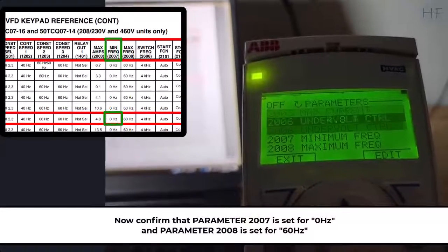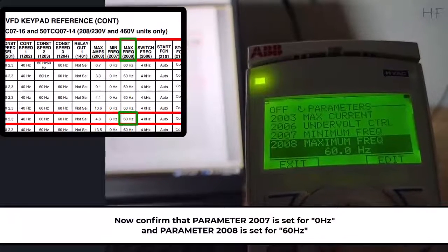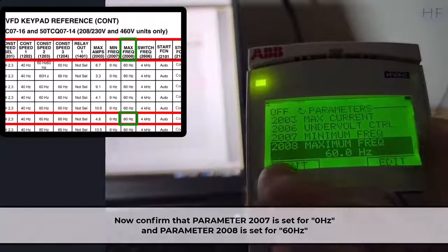Now move on to parameter 2007 and confirm it is set for 0Hz and that parameter 2008 is set for 60Hz.